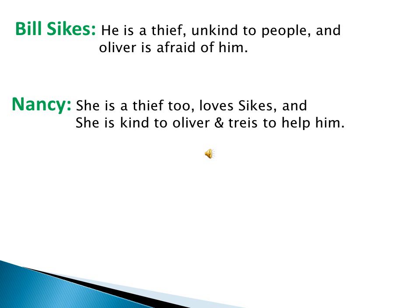Another character is Bill Sykes. He is a thief and unkind to people, and Oliver is very afraid of him in this novel. Another character is Nancy. She is a thief too. She loves Sykes but she is kind to Oliver and tries to help him, though she is a thief.